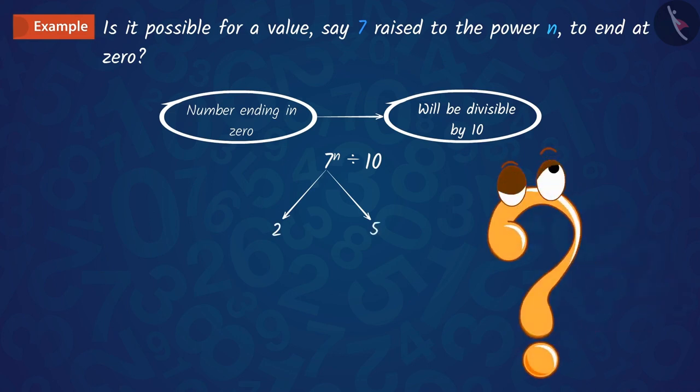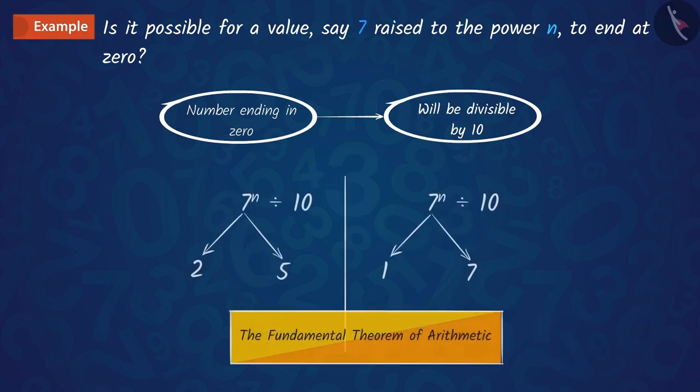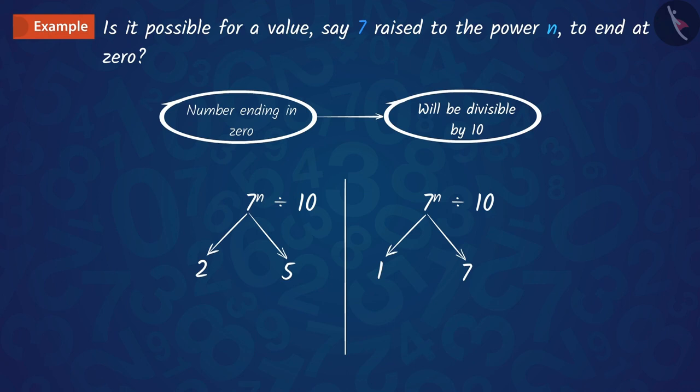Is it possible? No, this is not possible because if we look at the prime factorization of 7, we get only 1 and 7. So, the uniqueness of the fundamental theorem of arithmetic guarantees that there are no other primes, that is, 2 and 5, in the factorization of 7 raised to the power n.